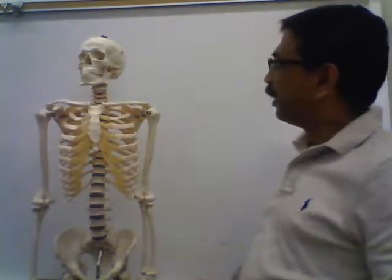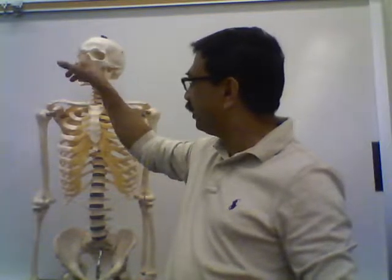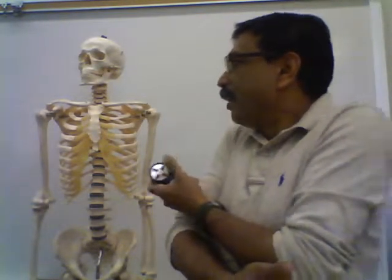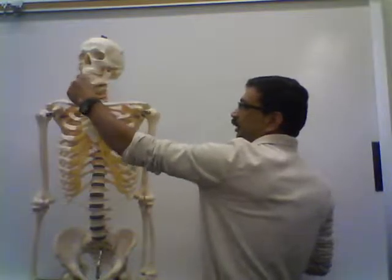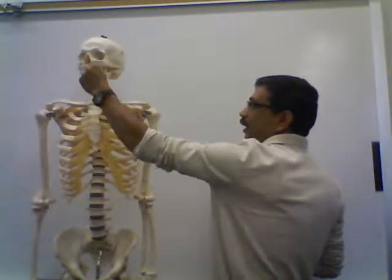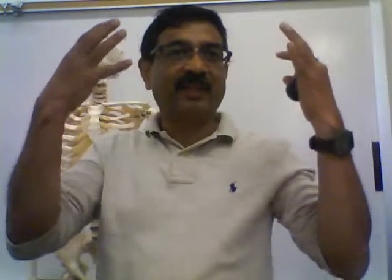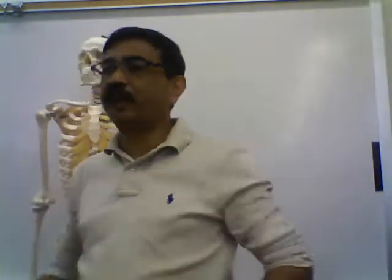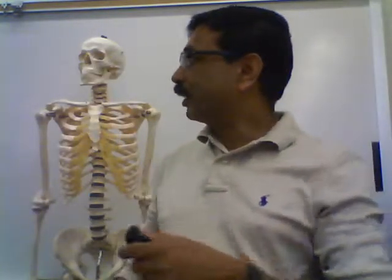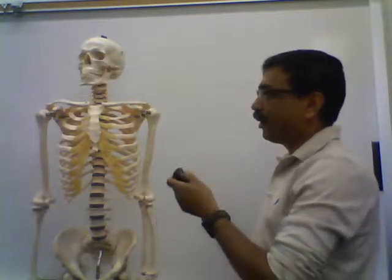Through the nasal cavity, air gets in; through the oral cavity, food enters into the body. Facial bones also serve as sites of attachment for teeth and muscles of facial expression. Your teeth are attached to the facial bones, and several small muscles attached to the facial bones help in facial expressions — such as when you look angry or sad.